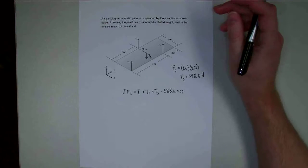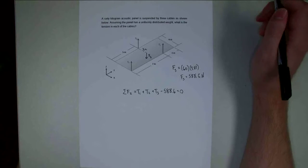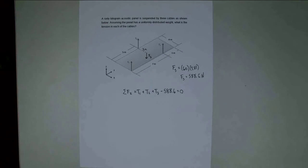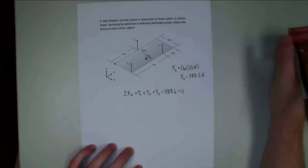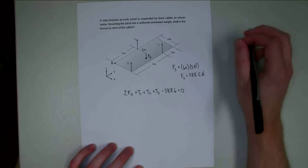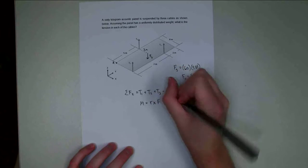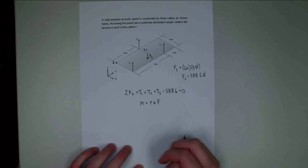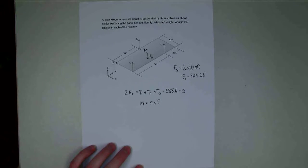Next, I'm going to need to find my moment vectors. For that, I'm going to use the cross product, which is a vector operation, to find all the moments about this point over here — let's call this point A. The moment is going to be equal to R cross F. I need to find the R and F vectors for each one of these, where R is the vector going from point A out to some point on that line of action.